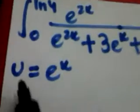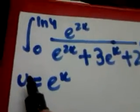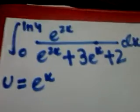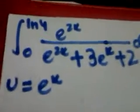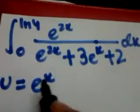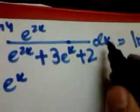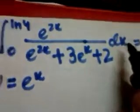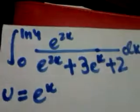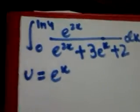We need to substitute e to the power x with u. That's why it's called integration by substitution — because we are using a substitution. We need to replace everything in x with u. So dx needs to be replaced with du, the limits in x need to be replaced with limits in u, and so on.